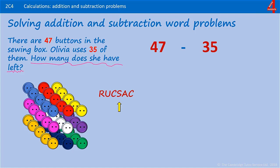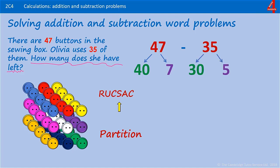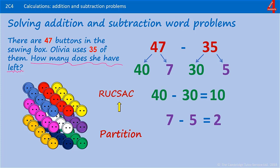To solve this, we are going to use partitioning. To partition 47, we have 40 and 7. To partition 35, we have 30 and 5. And we are going to take away. Starting with the tens: 40 take away 30 leaves 10. Now taking away the ones: 7 take away 5 leaves 2. We are left with 1 lot of 10 and 2 lots of 1, so we add those together. 10 add 2 is 12.